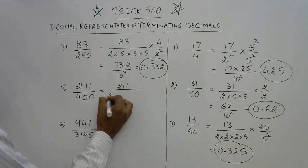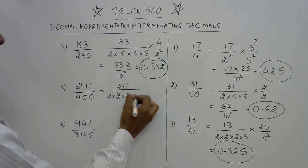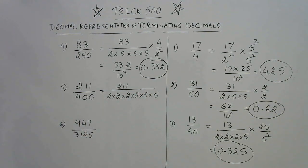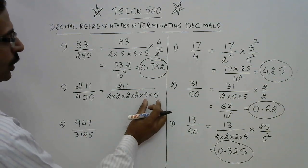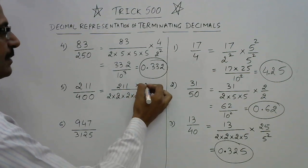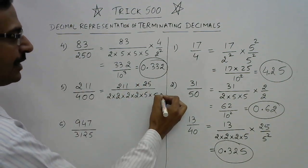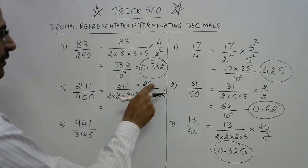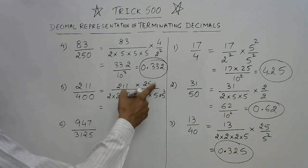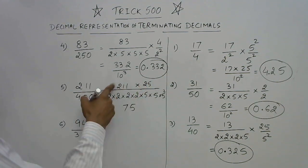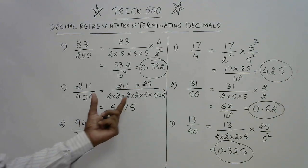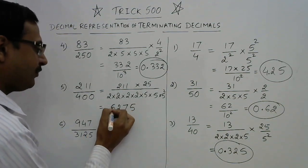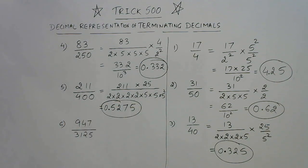Let us have one more. This is 211 upon 400. 400 means 2, 200, 100, 50, 25, so 5 and 5. This is 16 into 25, which is 400. Now see the deficit: we have 4 twos but only 2 fives, so we need 2 more fives. Multiply this by 25. Just find the product of 25: 25 into 1 is 25, 2 carry; 25 into 1 is 25, that's 27, 7, 2 carry; 50, 52. Now see the denominator: 4 twos and 4 fives, that means 1, 2, 3, 4. So 0.5275 is the required answer.